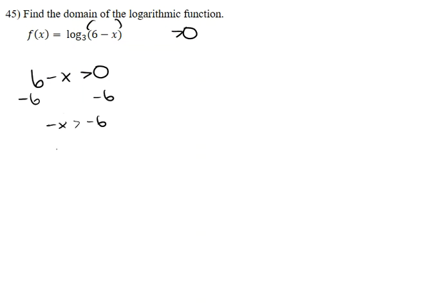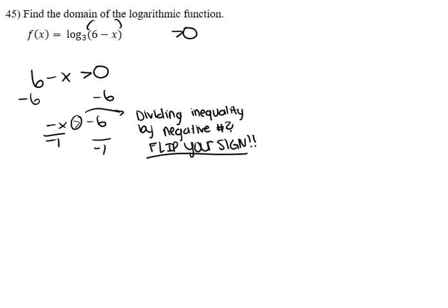We still have that negative 1 in front of the x so we need to divide both sides by negative 1. And when we do this you need to remember that whenever you have an inequality dividing by a negative number you have to flip the signs. So when we go ahead and divide both sides by the negative 1 and flip the sign, you're going to see that x is anything less than positive 6.